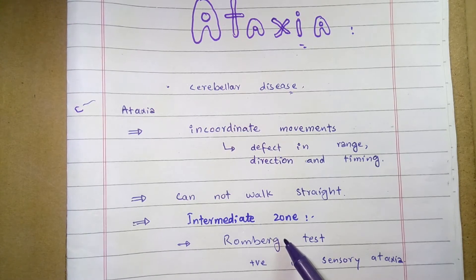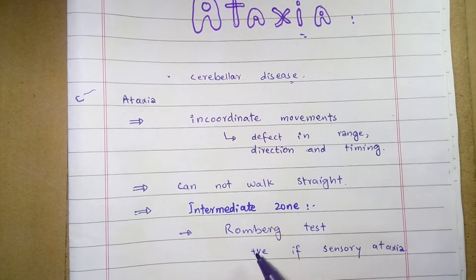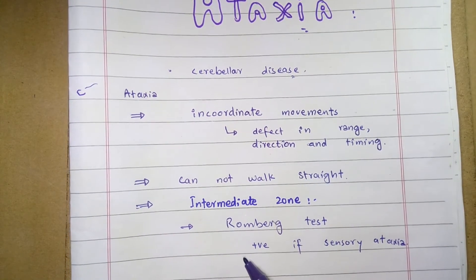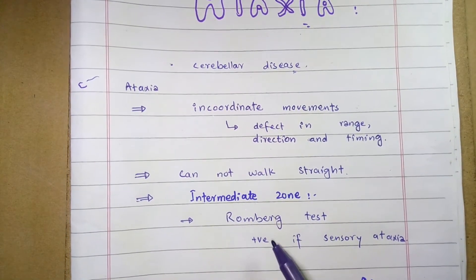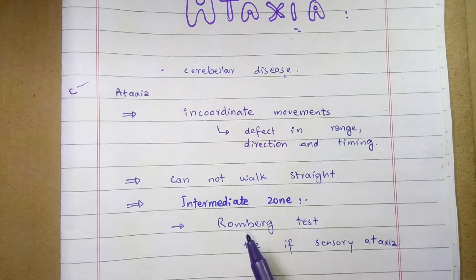Dysmetria is one type of ataxia. There are two types of ataxia: sensory ataxia and cerebellar ataxia. These two types are distinguished by the Romberg test.